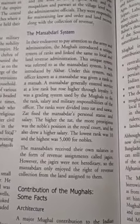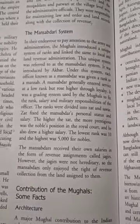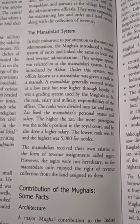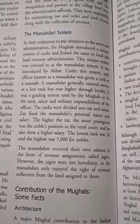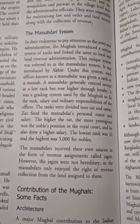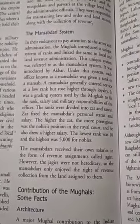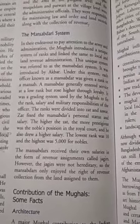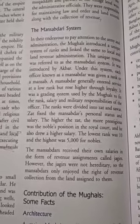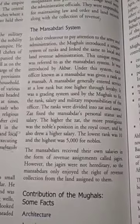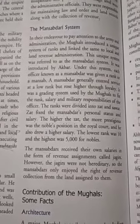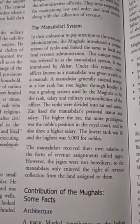The rank was divided into jat and savar. Jat fixed a mansabdar's personal status and salary. The higher the jat, the more prestigious was the noble's position in the royal court, and he also drew a higher salary. The lowest rank was 10 and the highest was 5,000 for nobles.